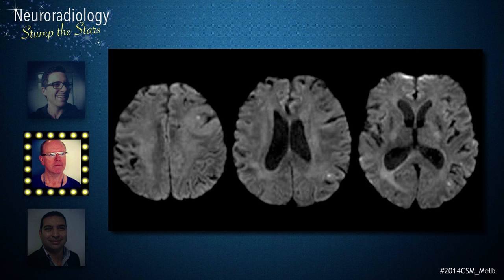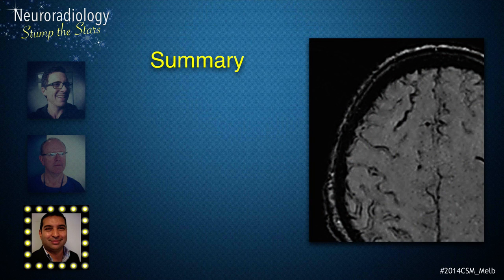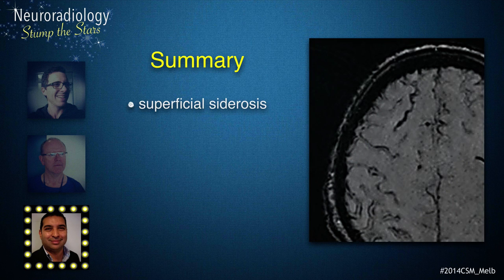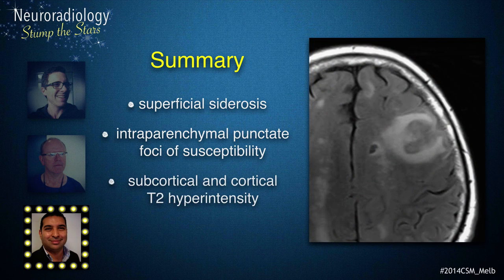The diffusion-weighted scan demonstrates multifocal punctate areas of diffusion restriction. In summary, we have extensive superficial siderosis, at least six foci of susceptibility artifact that are intra-parenchymal, extensive white matter abnormality, as well as some cortical involvement.